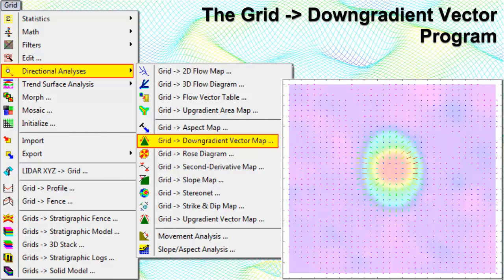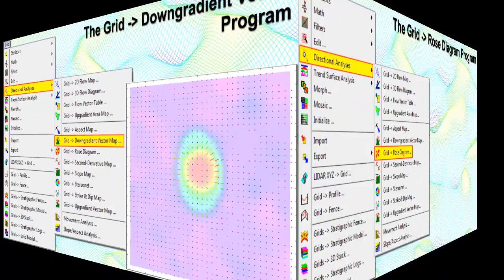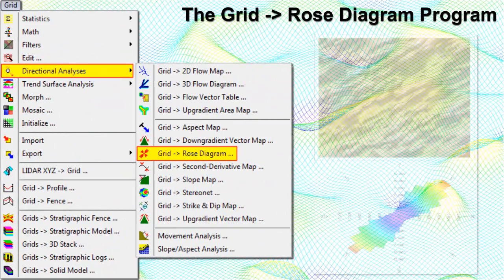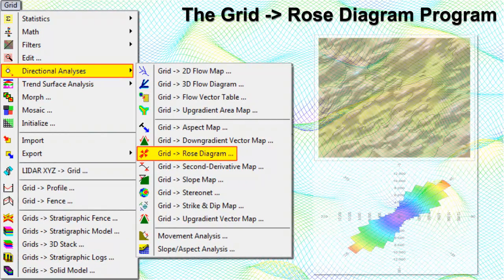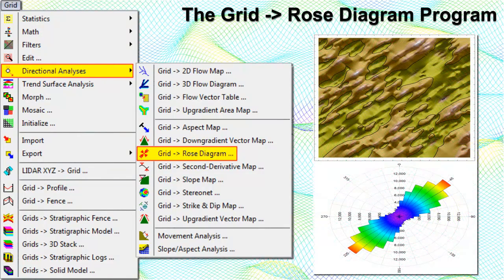The Grid to Down Gradient Vector Map program reads a grid model and creates a 2D map containing small arrows at each grid node pointing downhill; arrows may be scaled and/or color-coded according to the steepness of slope. The Grid to Rows Diagram program computes the changes in Z values, typically elevations, between neighboring grid nodes, noting the direction from 0 to 360 degrees of steepest change, in order to create a rose diagram summarizing the directionality of the aspect bearings — i.e., the dip direction — or the corresponding structural bearings, i.e., the strike direction.